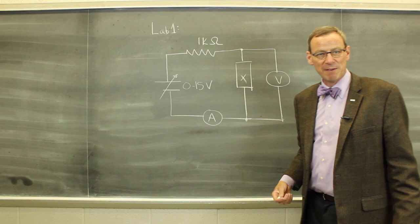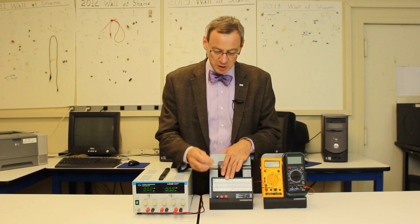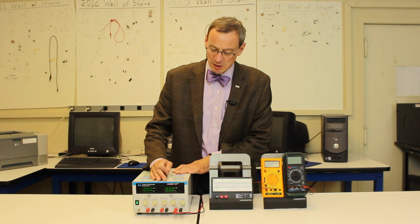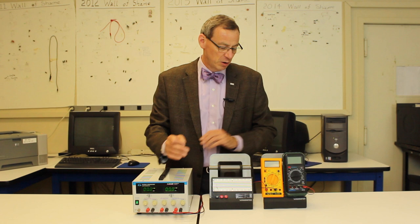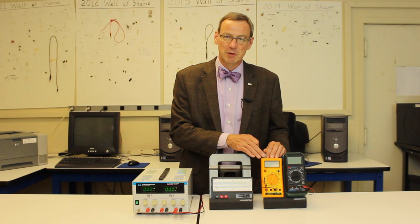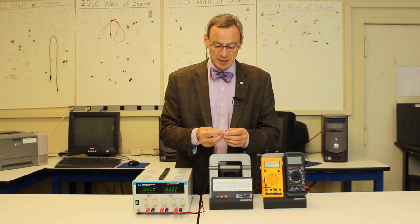In lab one, we're going to be measuring the IV curve of various passive components. In this particular part, I've got a blue LED that we'll be measuring the IV curve of. We have a DC power supply that we can go from 0 to 15 volts, and we'll see how to reverse it to go from 0 to minus 15 volts. We have two multimeters — one to measure voltage and one to measure current — and we'll vary the voltage to map out the IV curve of this LED.